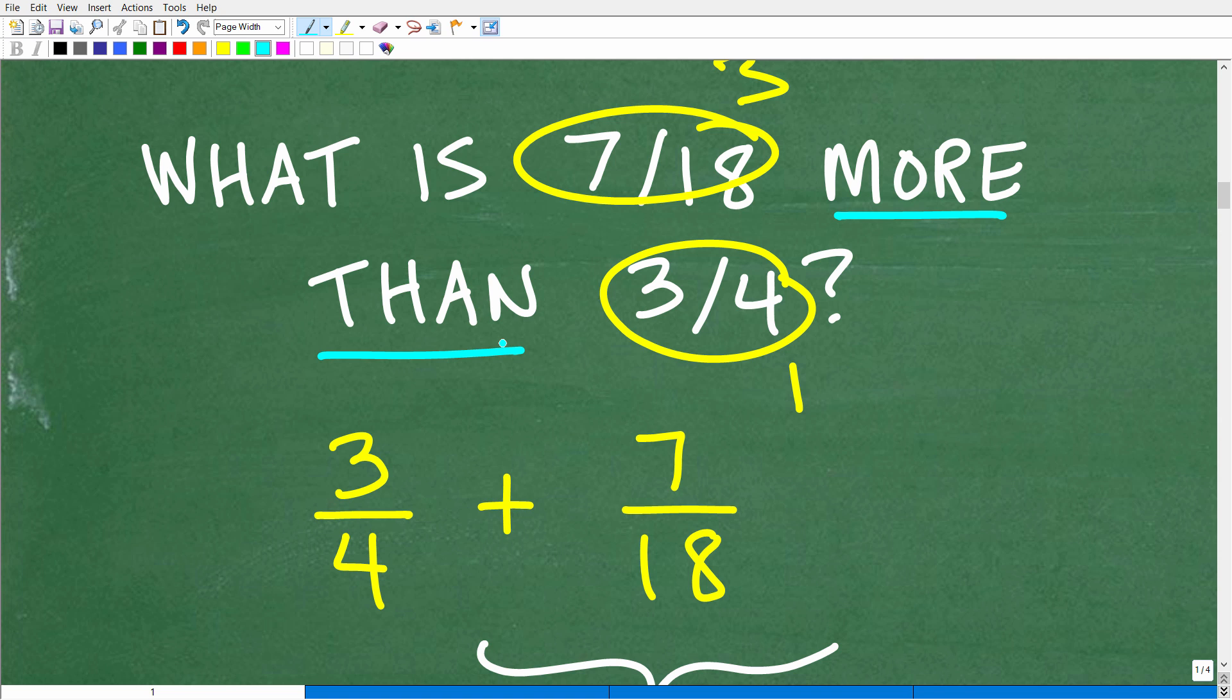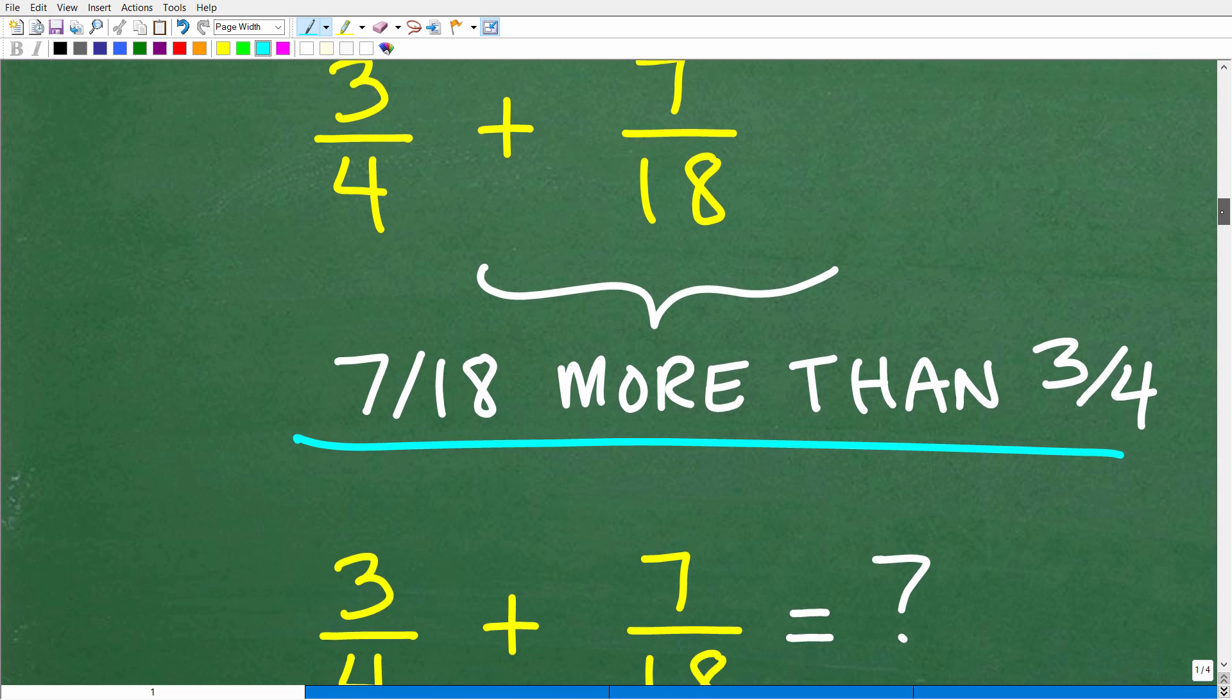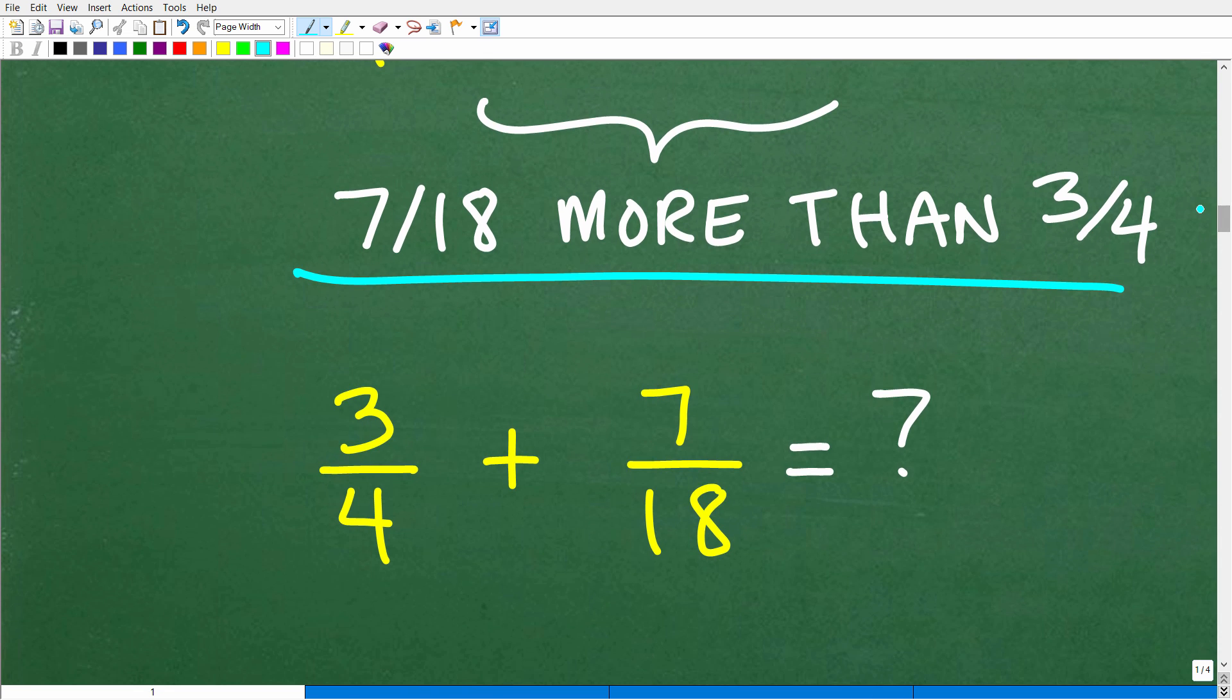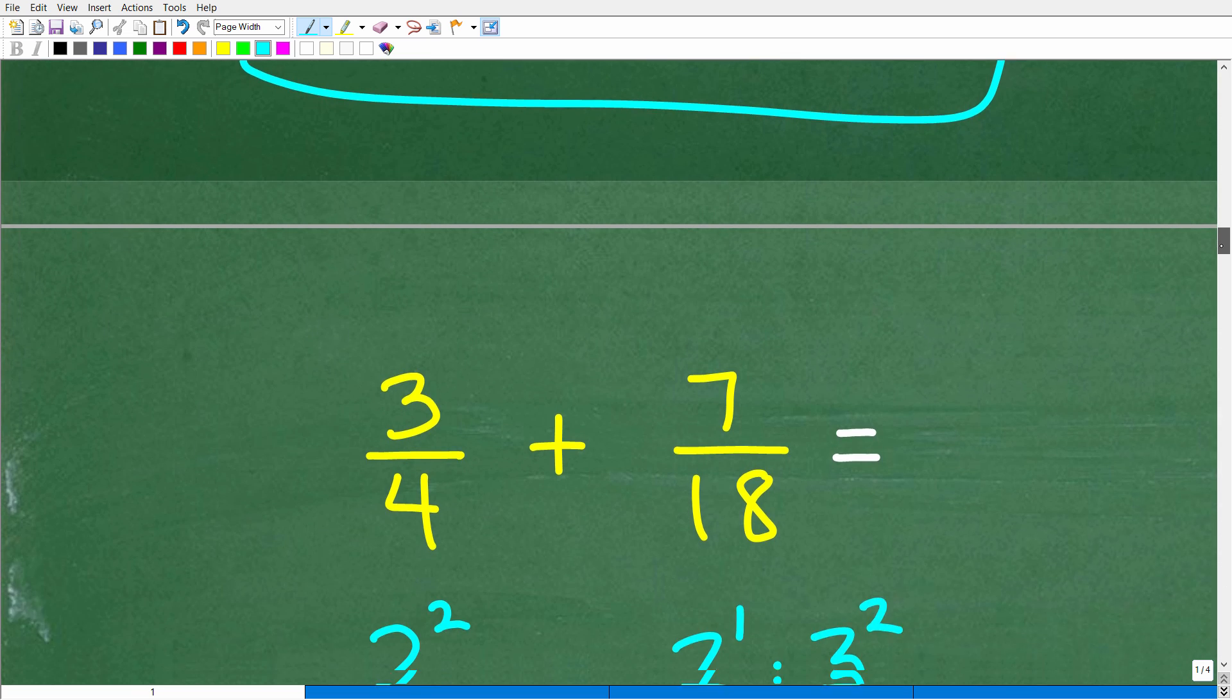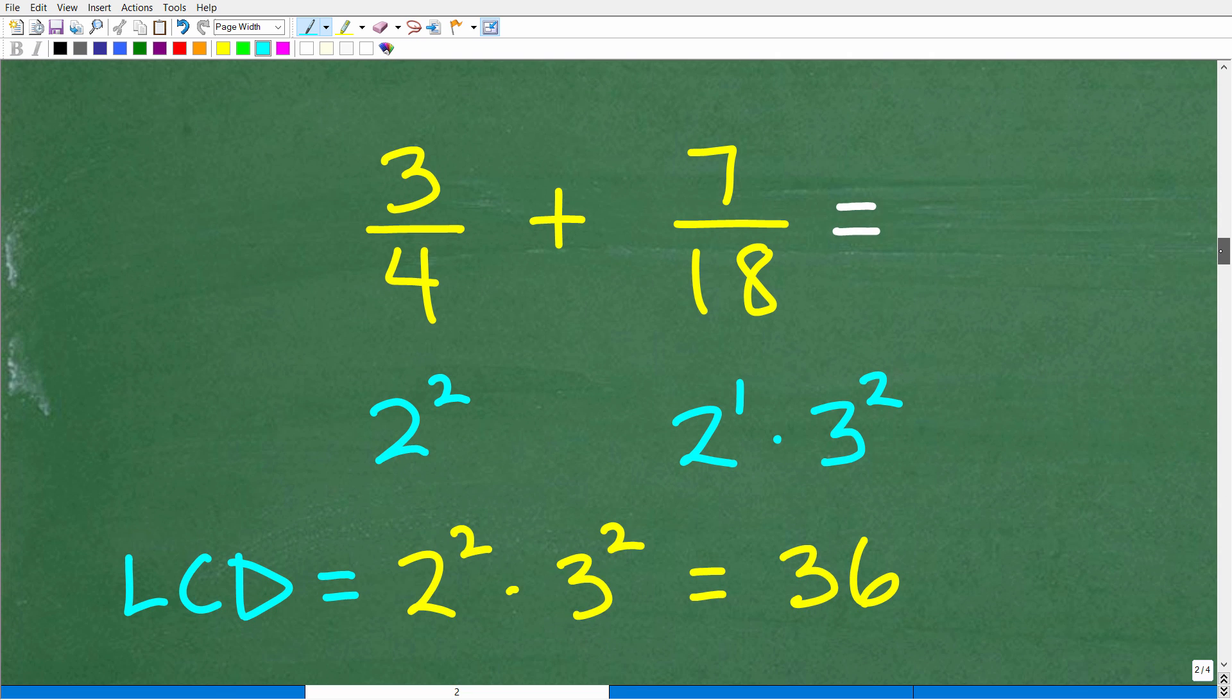Always try to see if you can construct a simpler version of the problem to kind of model what's going on. Think about how to solve that and then just translate that logic over to your actual problem. So basically here we are adding these two fractions, seven eighteen plus three fourths. And so now this becomes a fraction addition problem.